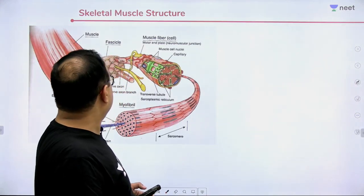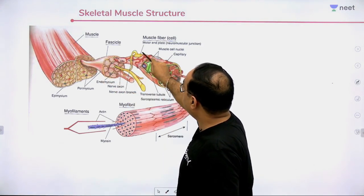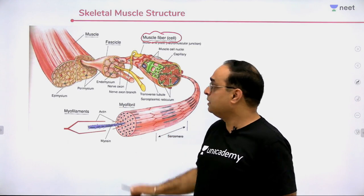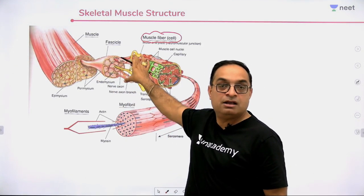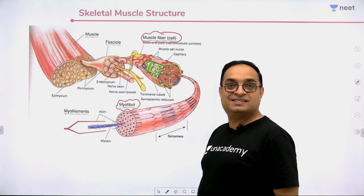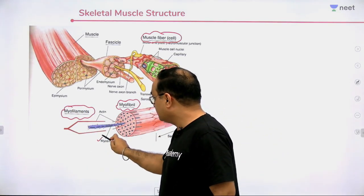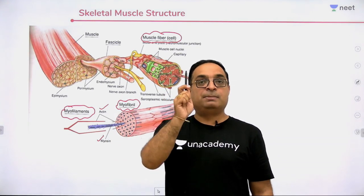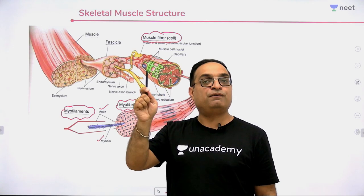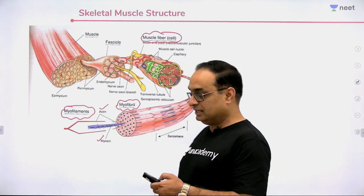Now let's look at the skeletal muscle structure in detail. A muscle fiber contains many myofibrils. A myofibril contains many myofilaments. Myofilaments are of two types: thick myosin filaments and thin actin filaments. Remember: M for myosin, M for mota (thick). The arrangement of myosin and actin produces alternate light and dark bands — giving the striated appearance. We'll cover this in more detail in the chapter on movement and locomotion.